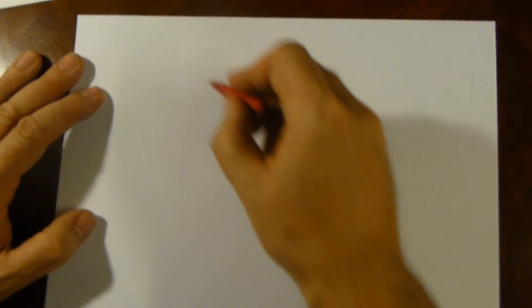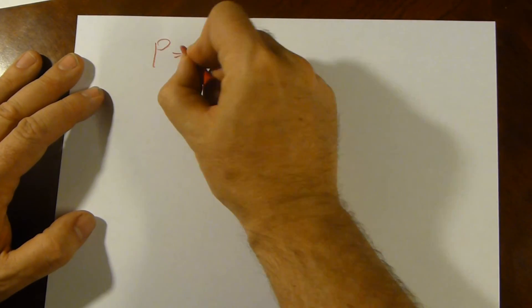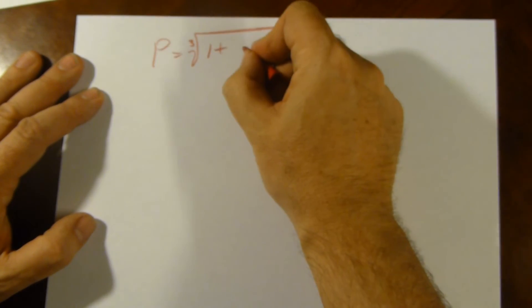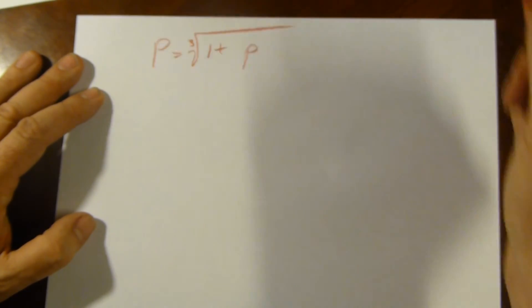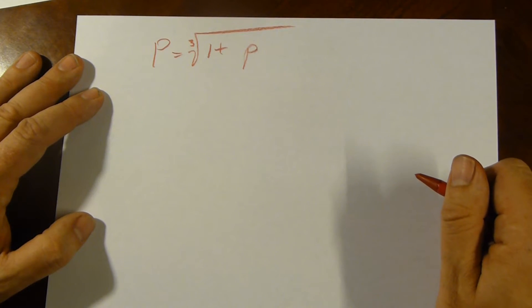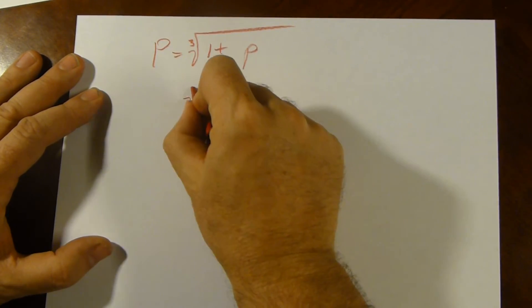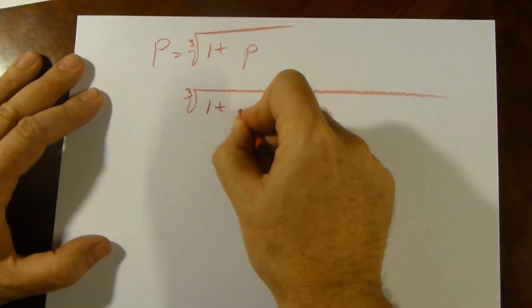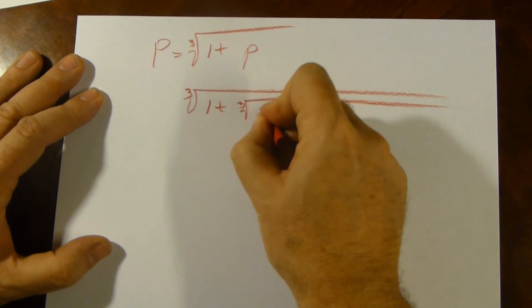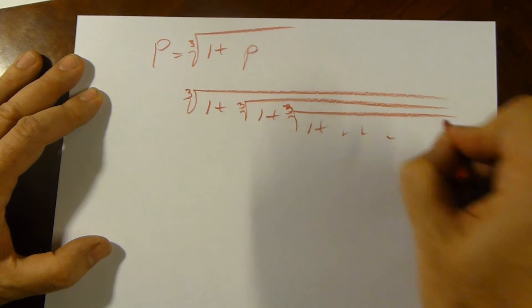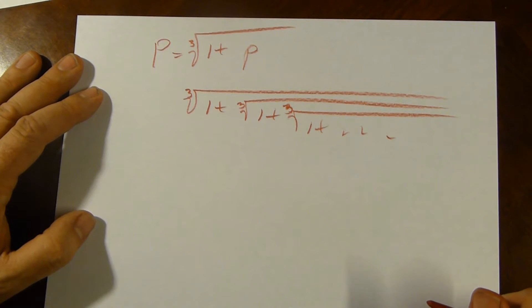We're going to look at a couple of other examples real quick here. We're going to calculate something called the plastic constant, which we can do by saying cube root 1 plus p. Okay, using that, let's just repeat it over and over and over, so we get cube root 1 plus cube root 1 plus cube root 1 plus, and so forth. This yields a number known as the plastic constant,